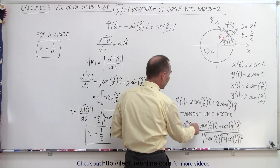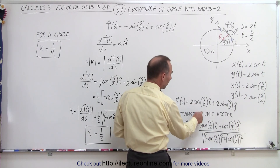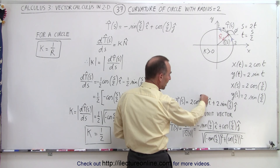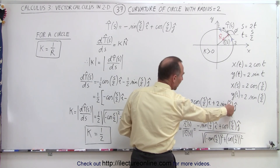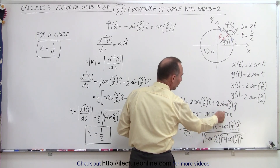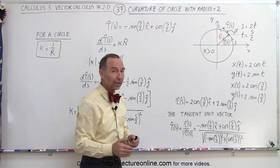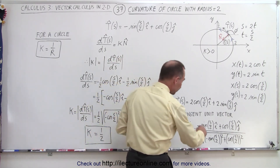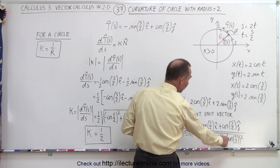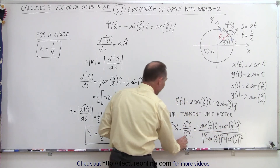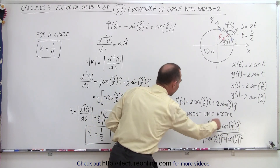The derivative of the position vector would be minus the sine of s over 2 in the i-direction. Where did the 2 go? Well, we also have to take the derivative of the angle, which is 1/2, and that cancels out the 2. Same here — taking the derivative of the angle gives 1/2, which cancels out the 2. The derivative of the sine is positive cosine, and the derivative of the cosine is negative sine. The magnitude of that will be the square root of the sum of the squares of the two components, which equals 1. So the unit tangent vector will simply equal the numerator.